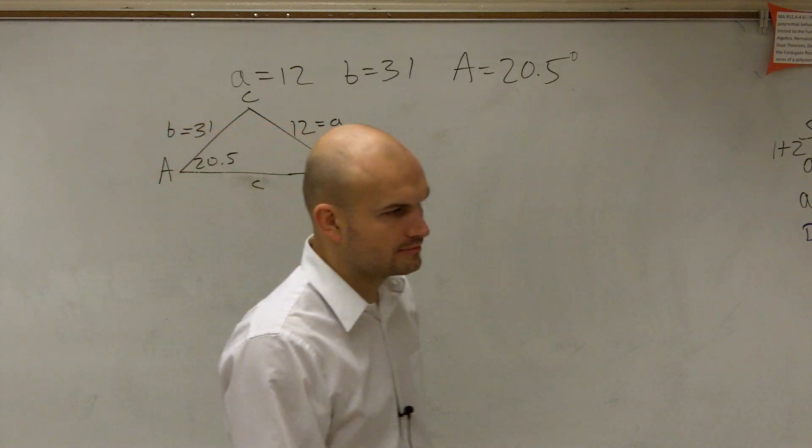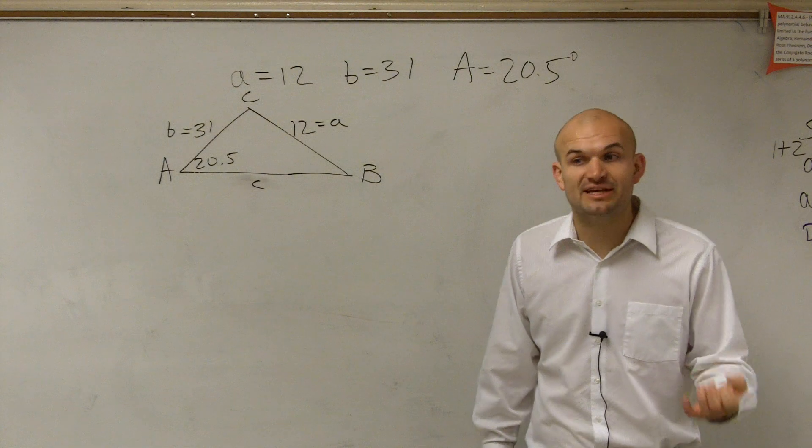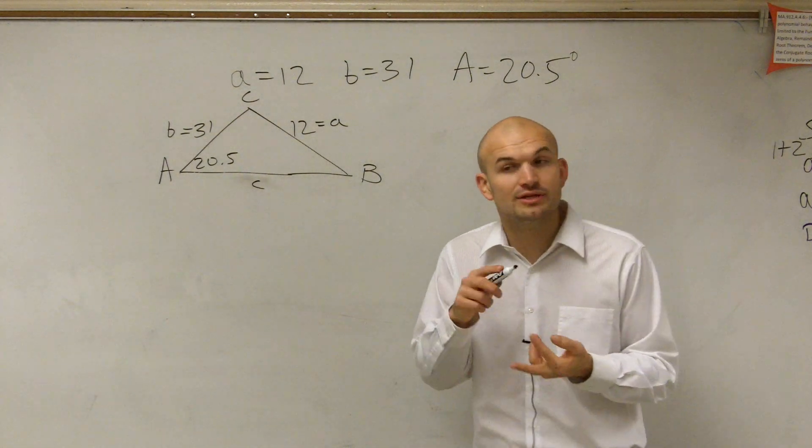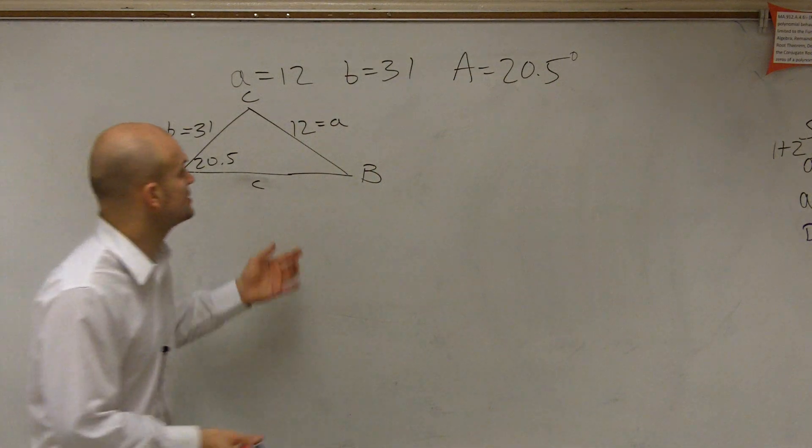All right, so now again, since we have side side angle, we know we have an ambiguous case. We can have one solution, no solution, or two solutions. So first of all, let's just go through and see what we have.